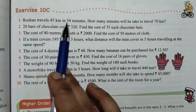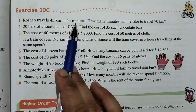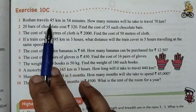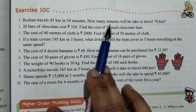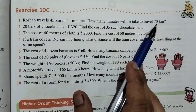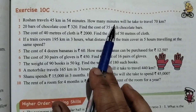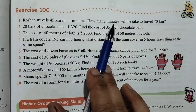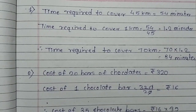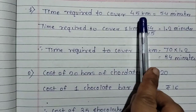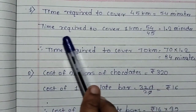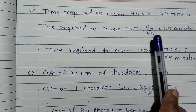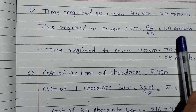Question number 1: Roshan travels 45 km in 54 minutes. How many minutes will he take to travel 70 km? Time required to cover 45 km is equal to 54 minutes. Time required to cover 1 km is equal to 54 divided by 45, which gives 1.2 minutes.